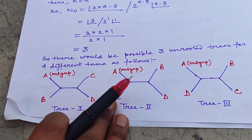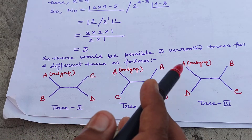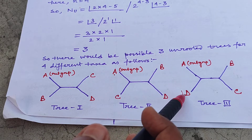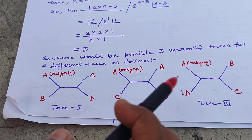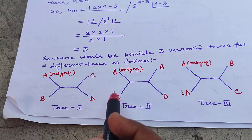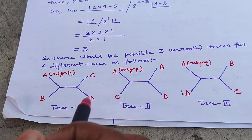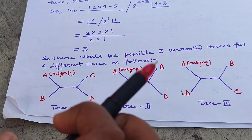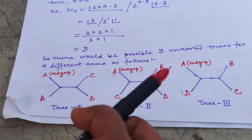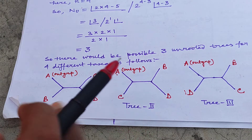So what would be those 3 unrooted trees? In all three trees we have kept A as our outgroup. In the first tree, A and B are kept together as a sister group. In the second, A and C are together, and in the third, A and D are together as a sister group. Whenever A and B are sister group, C and D become the other sister group. When A and C are sister group, B and D become the other sister group. When A and D are sister group, B and C become the other sister group. Now we have to find out which one of these 3 shows the lowest number of mutations — that tree would be our most parsimonious tree.